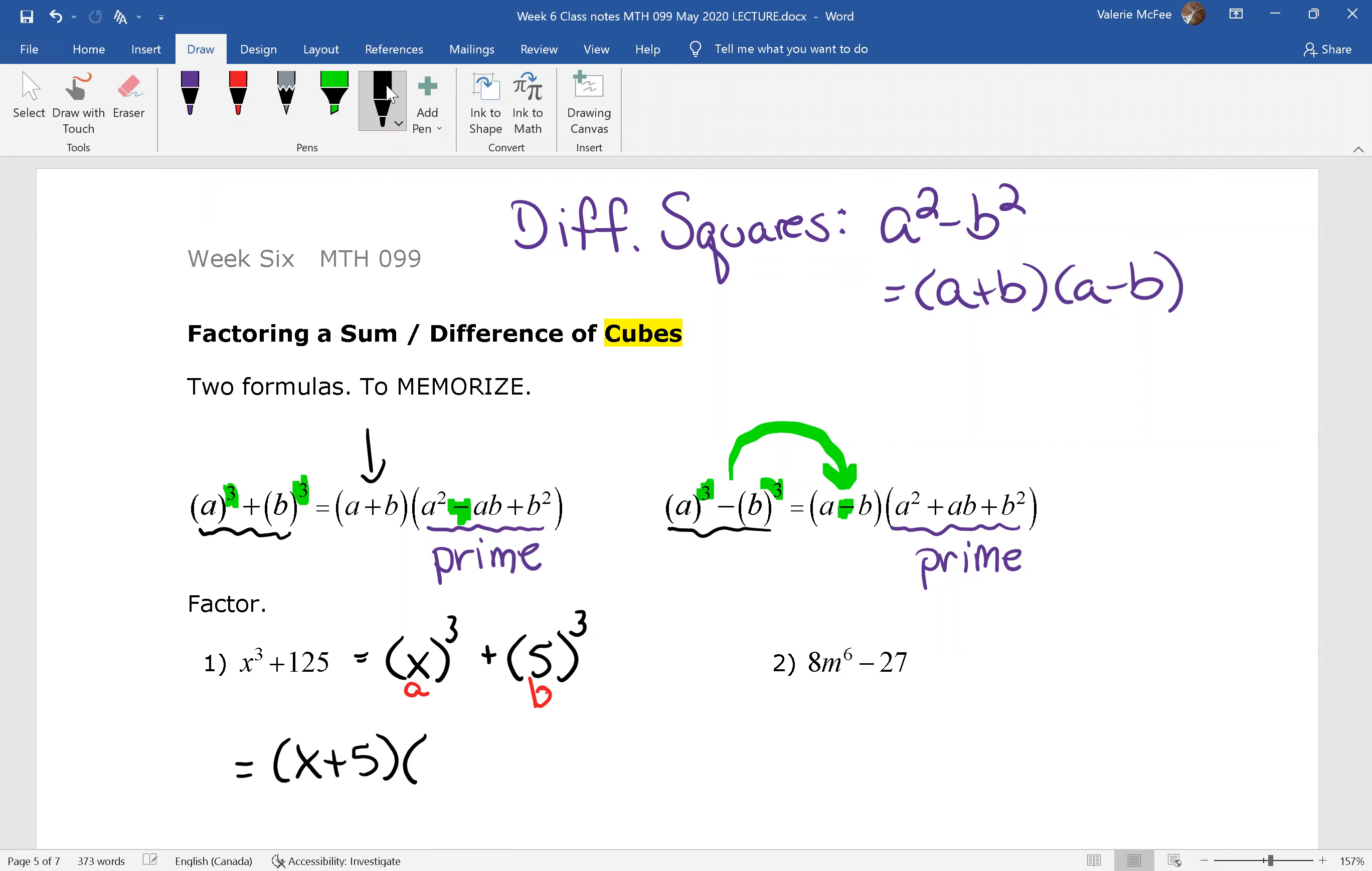a². Well, that's going to be x². Here's our minus sign in the formula, a times b, that's 5x plus b². In this case, b² is 25.